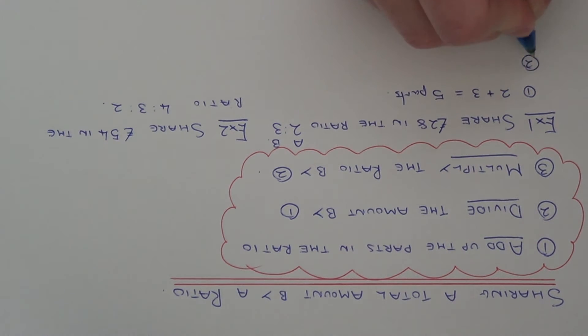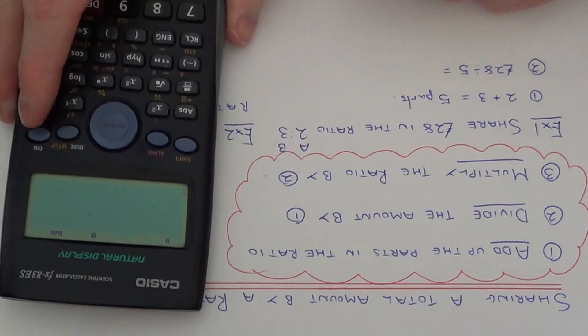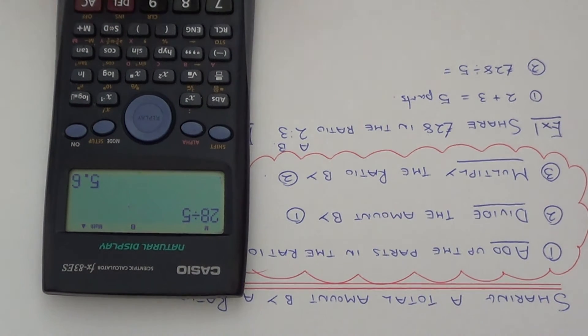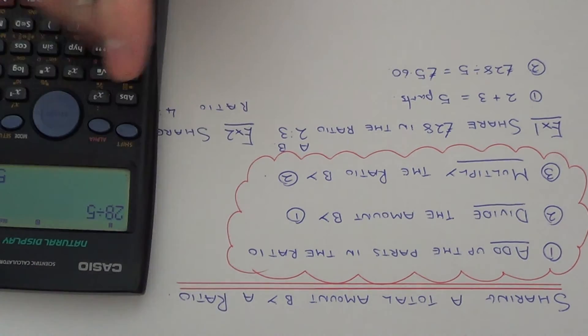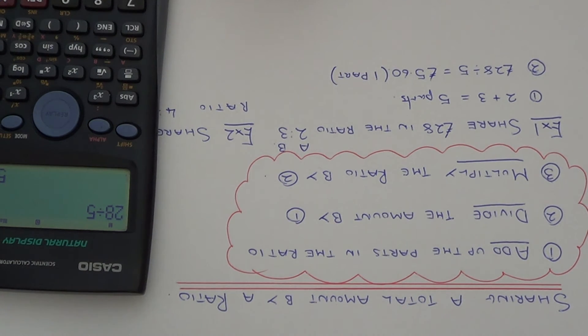So the second step we divide the total amount of money by our answer from step one. So we do £28 divided by five. So you can use your calculator on this one. So 28 divided by five is £5.60. So this tells us that one part is equal to £5.60.